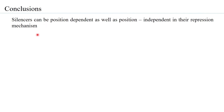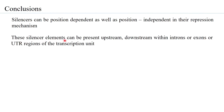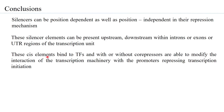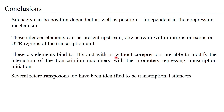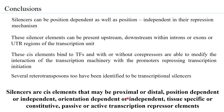In conclusion, silencers can be position-dependent or position-independent in their repression mechanism. These silencer elements can be present upstream, downstream, within introns or exons, or in 5' UTR regions of the transcription unit. They bind to transcription factors and, with or without core repressors, modify the interaction of the transcription machinery with promoters, repressing transcription initiation. Several retrotransposon regions have been identified as transcription silencers. Overall, silencers are cis-elements that may be proximal or distal, position-dependent or independent, orientation-dependent or independent, tissue specific or constitutive, and passive or active transcription repressor elements.